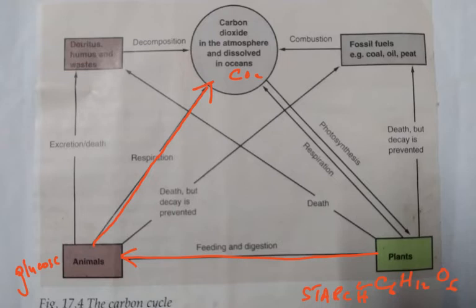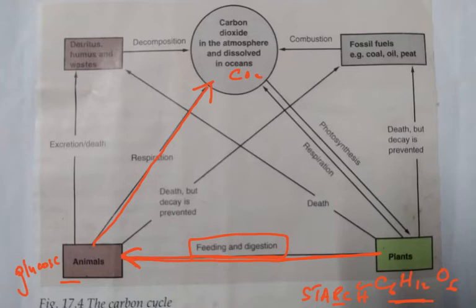In respiration, remember, energy is released — not produced. We can't say energy is produced; that's wrong biological English. So when you eat a potato, fries, rice, bread, or a piece of cake — it's starch — the carbon in the form of starch is converted back to glucose by digestion. So feeding and digestion converts starch to glucose, and then the glucose is respired and energy is released.